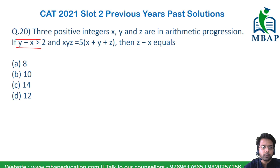If y minus x is more than 2 and xyz equals 5 times (x plus y plus z), where x, y and z are already in AP, the question is to find the difference z minus x.